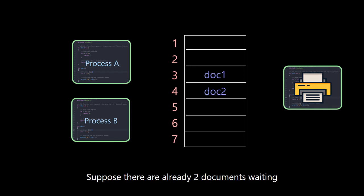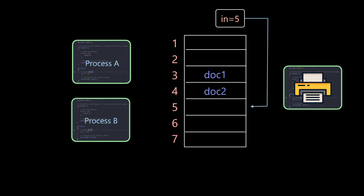Suppose there are already two documents waiting to be printed. There is a shared variable in that points to the next position, number 5, to be added. The other is a variable out that points to the next position, number 3, that needs to be printed.